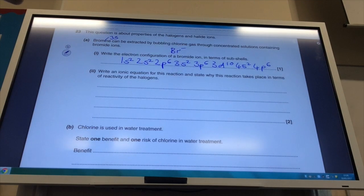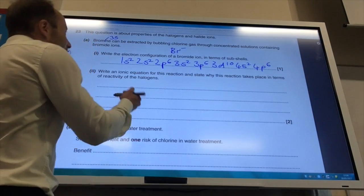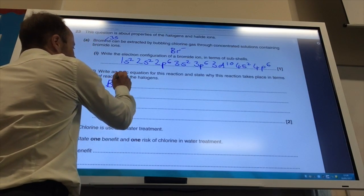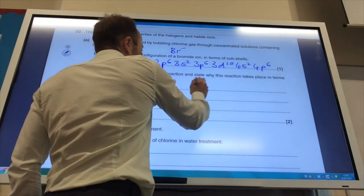Write an ionic equation for this reaction and state why it takes place in terms of the reactivity of the halogens. So you're going to start with bromide ions, Br minus. You are adding chlorine gas, Cl2.